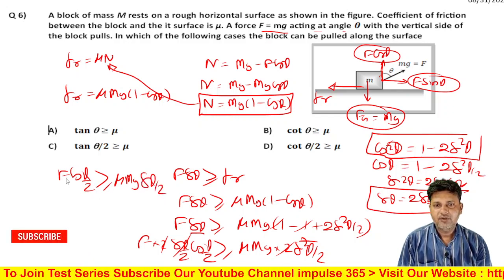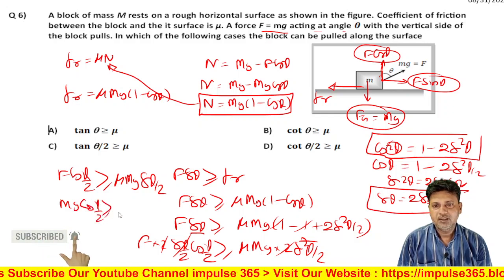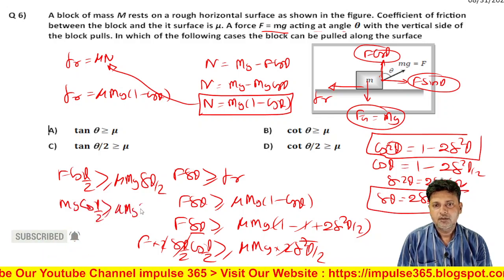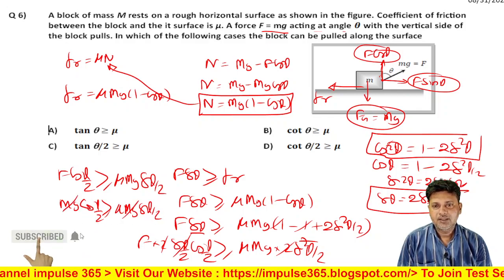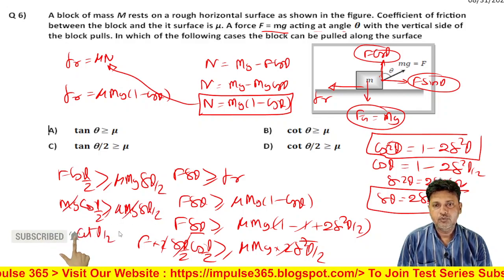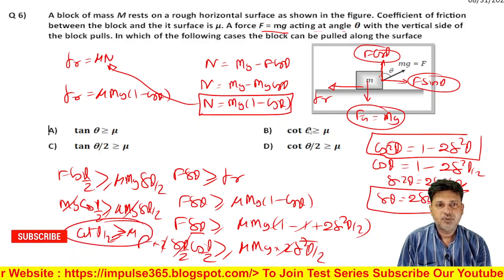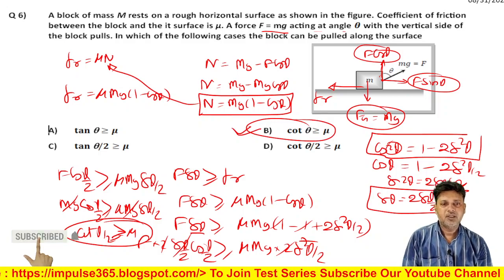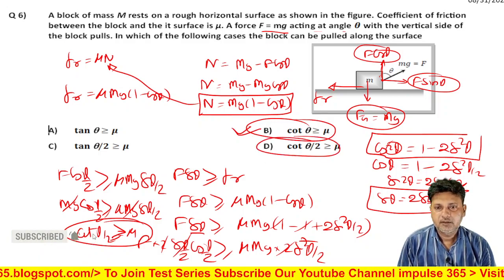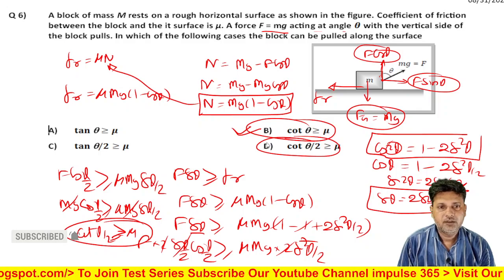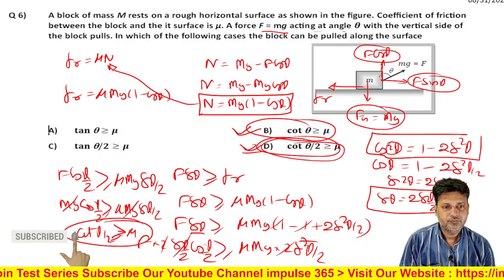Since F is equal to mg, substituting gives mg cos(theta/2) greater than or equal to mu mg sin(theta/2). Cancelling mg from both sides: cos(theta/2) greater than or equal to mu sin(theta/2). Therefore the condition becomes cot(theta/2) greater than or equal to mu, or equivalently tan(theta/2) less than or equal to 1 over mu.